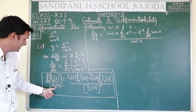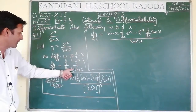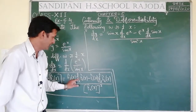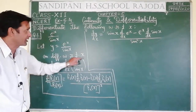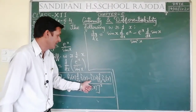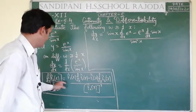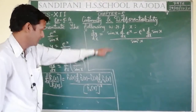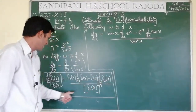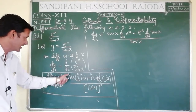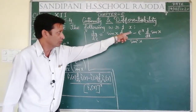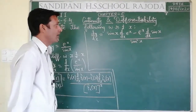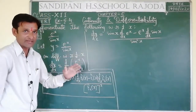Denominator हमारे पास sin x था, फिर d/dx of numerator — numerator e^x था — फिर minus numerator e^x, फिर d/dx of denominator sin x, अपन में sin²x. Now apply the formula for differentiation: d/dx(e^x) = e^x only. e^x के साथ trigonometric function है — पहले exponential function लिखना होता है, बाद में trigonometric — तो e^x · sin x.